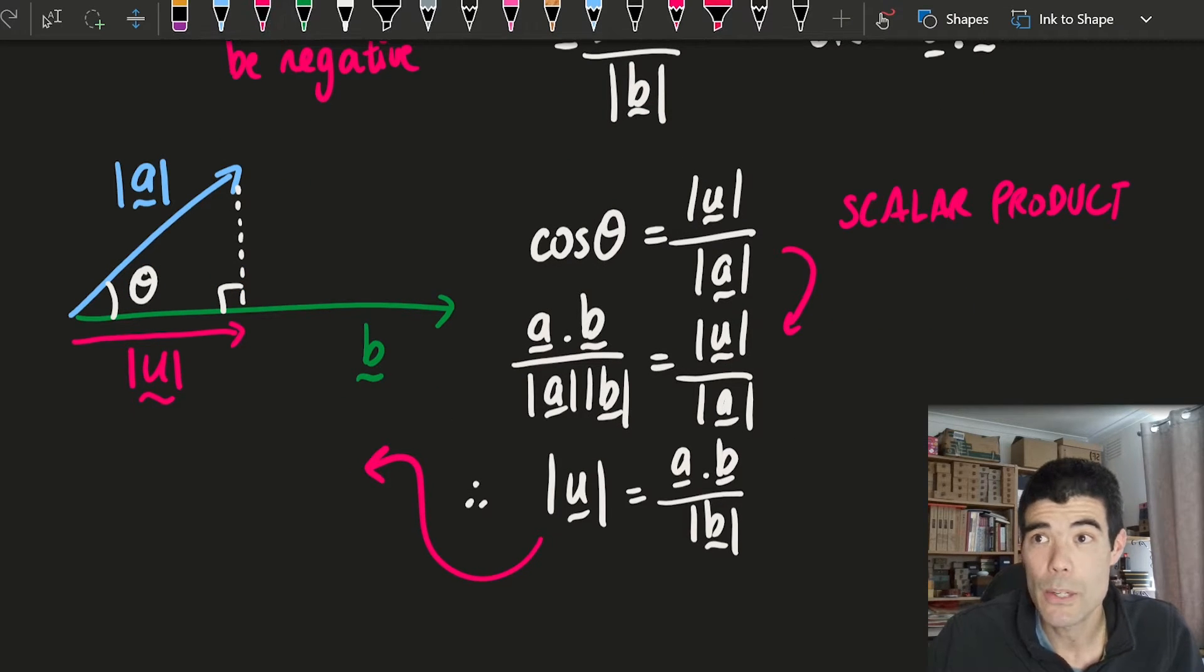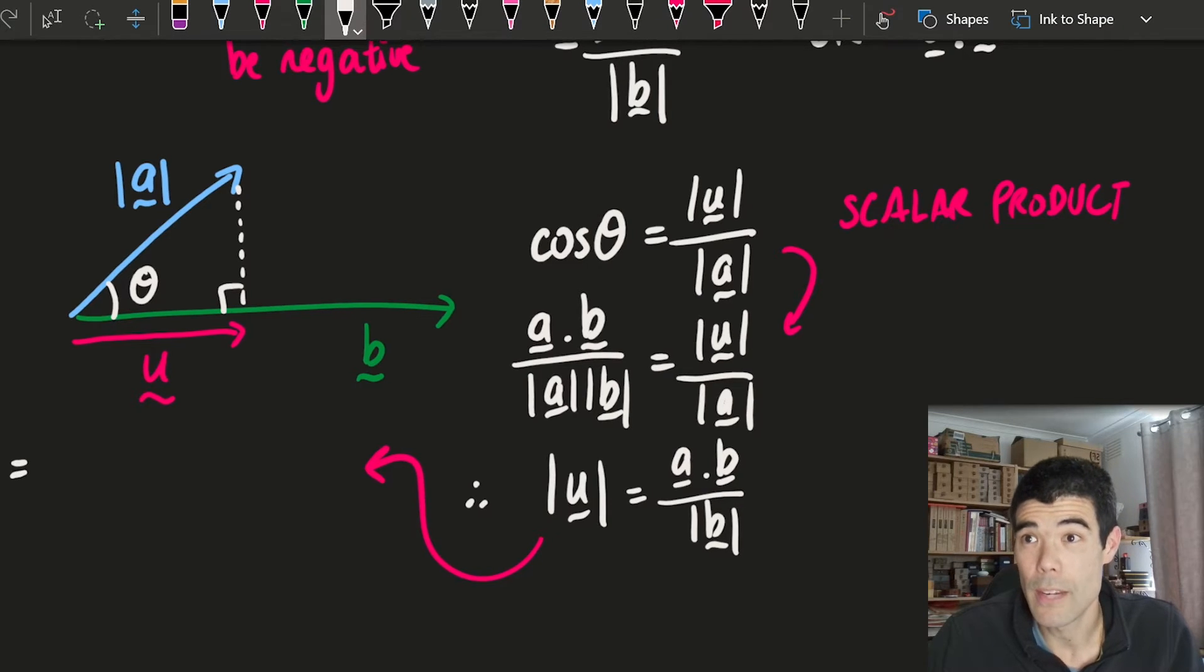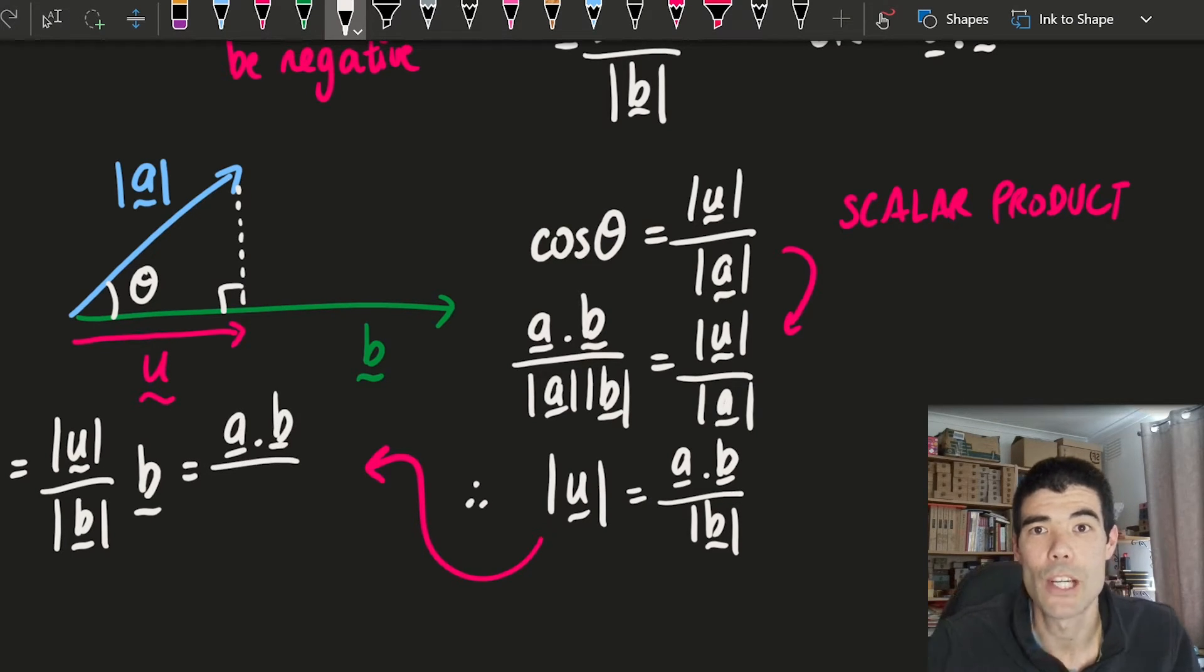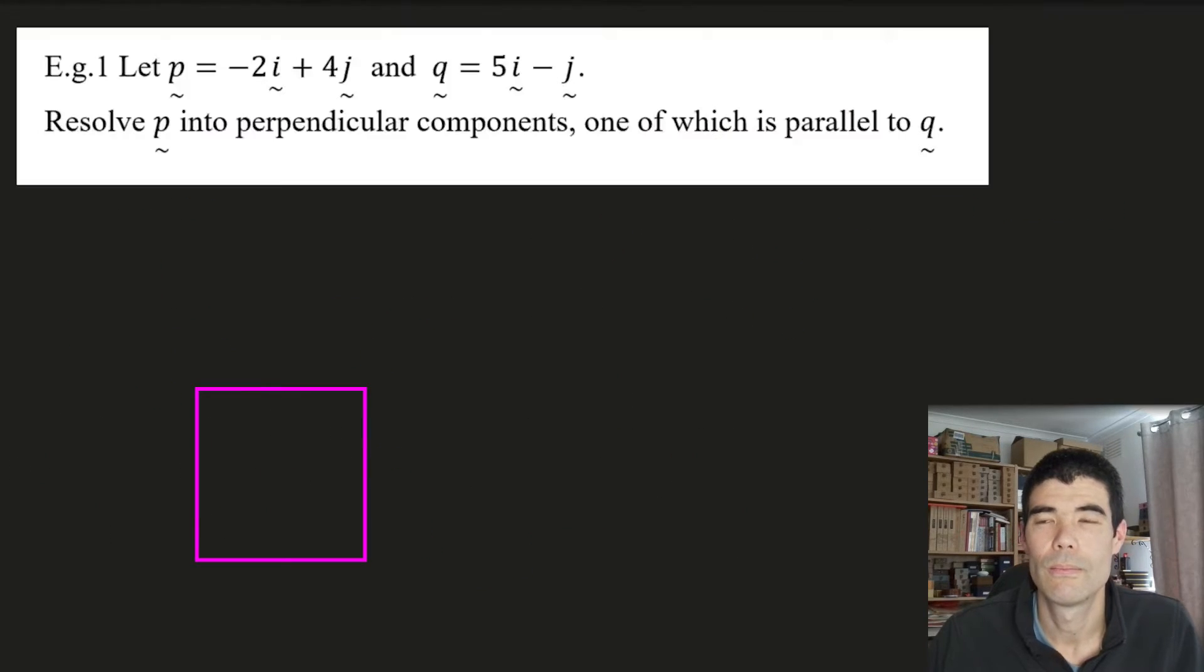Now, to use that to find the vector projection, imagine we're trying to find this vector u. We want to go parallel to b, and how far do we want to go? We need to know what fraction of the length of b is the length of u. So length of u over length of b times vector b, and that would give us our vector projection formula.